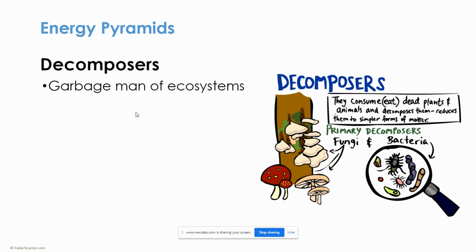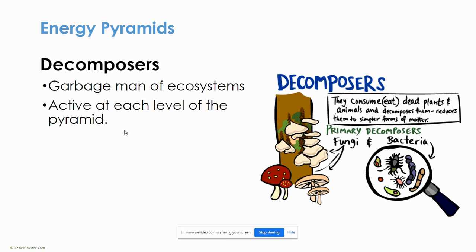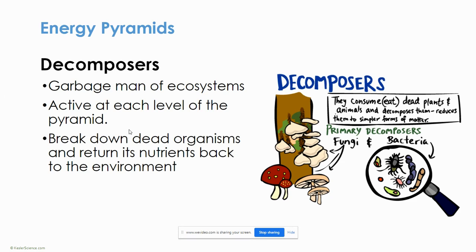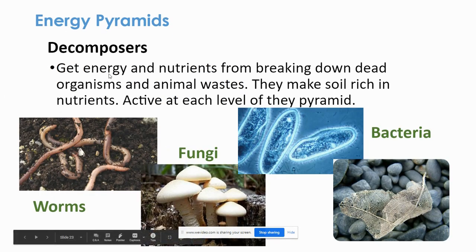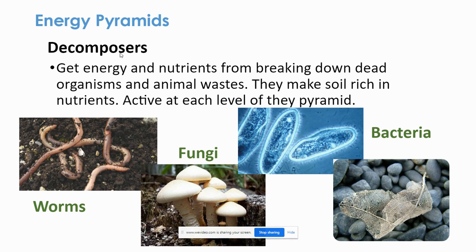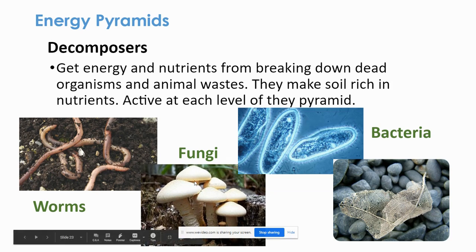Decomposers eat dead stuff — they're the garbage men of the ecosystem. They are active at each level of the food pyramid, breaking down dead organisms and returning nutrients back to the environment. Without decomposers, our earth would be littered with dead stuff. They get their energy from dead organisms and animal waste and make the soil rich in nutrients. Examples include worms, fungi like mushrooms, and bacteria.